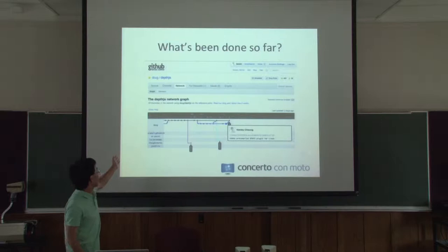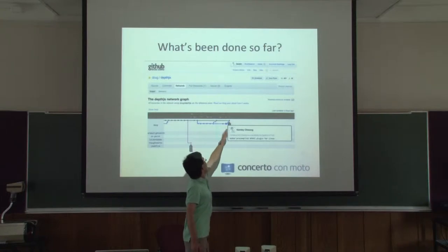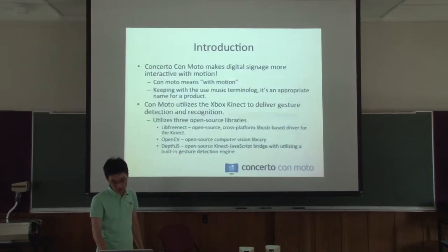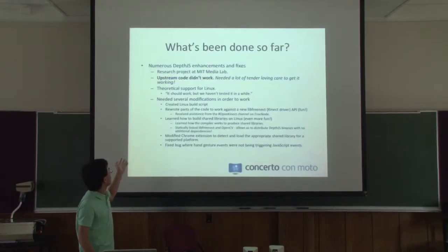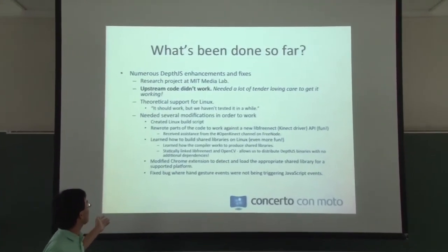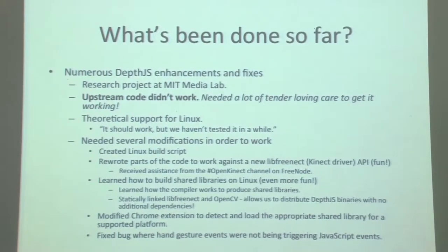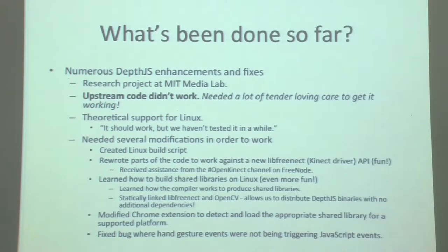This is a graph of the commits I've been making over the course of this summer. This blue stuff here is what I've done, and you can see it's been merged back into the main tree twice. Going into more depth of what I've done: I created a build script for Linux, rewrote parts of the code to work against a new LibFreeMect API, and I reached out to a lot of people on IRC and other resources.